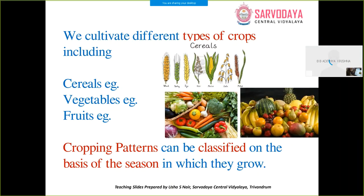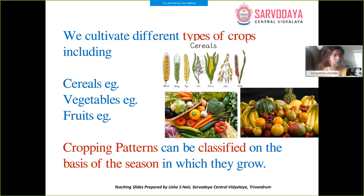We also cultivate different types of crops — cereals like wheat, rice, maize, and barley; vegetables; and fruits. We cultivate different types of crops including cereals, vegetables, and fruits.